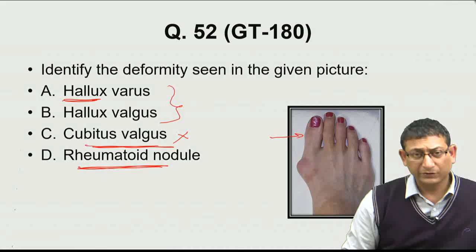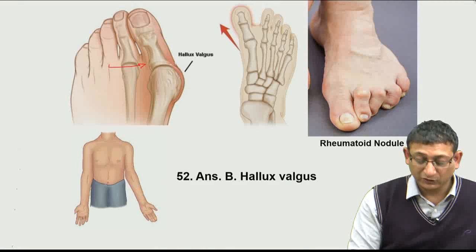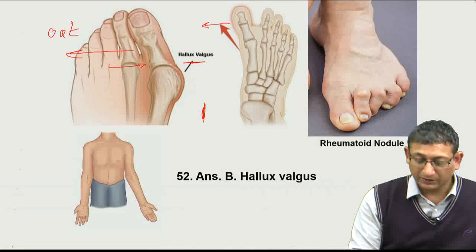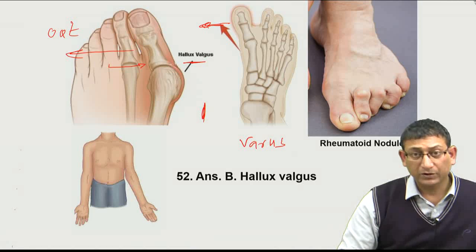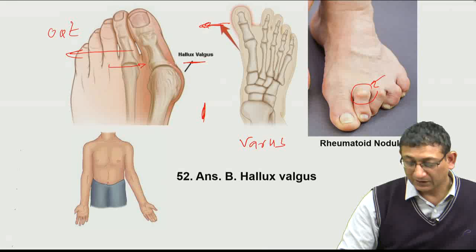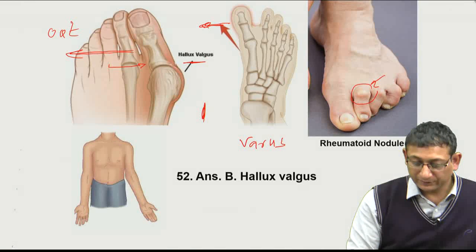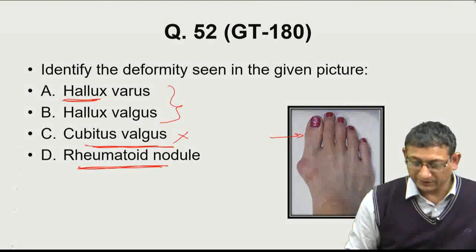Another possible option is a rheumatoid nodule. When the great toe at the first metatarsophalangeal joint goes outward, we call it hallux valgus. When it goes inward toward the midline, we call it hallux varus. Rheumatoid nodules can sometimes look similar, but in the given picture, the great toe has gone outward — so this is hallux valgus deformity. The answer to question 52 is hallux valgus.